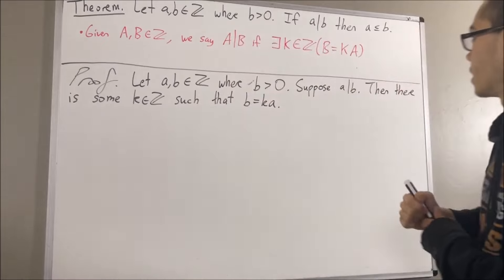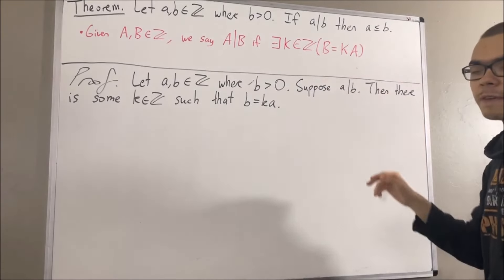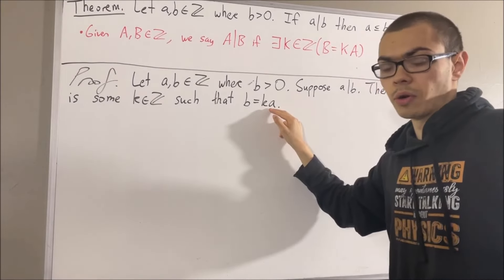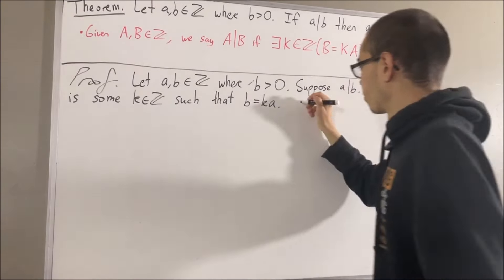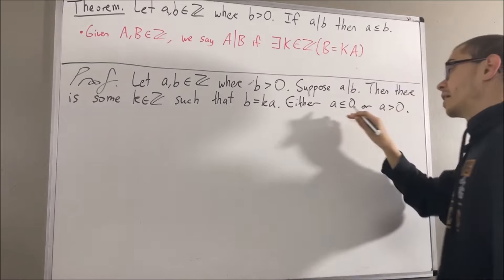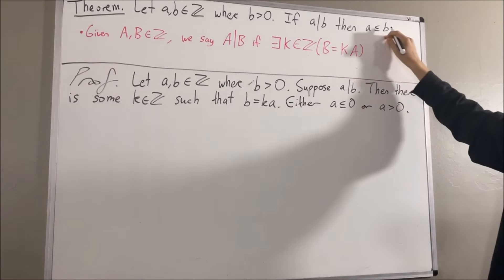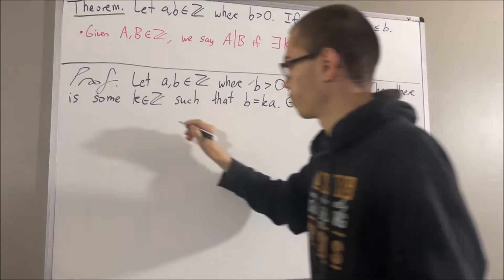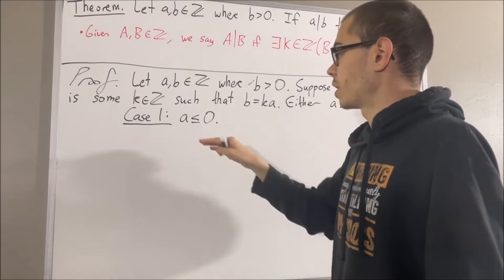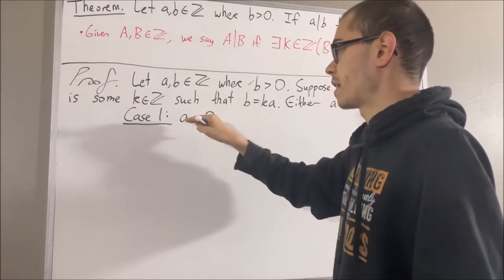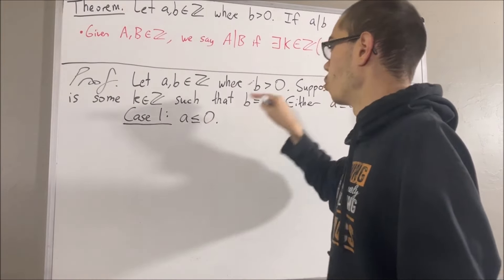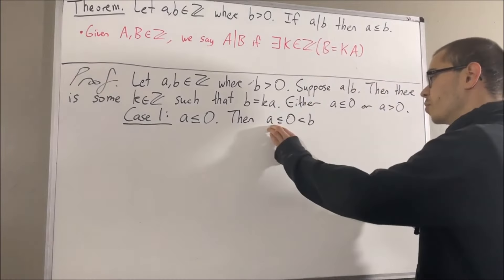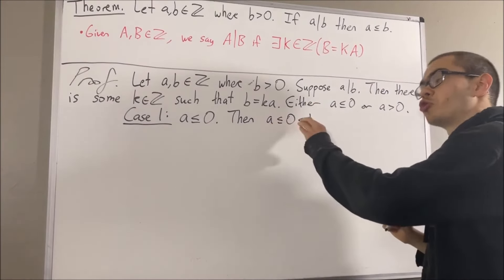From here, to show that a is less than or equal to b, we're going to divide this up into two cases: either a is less than or equal to zero, or a is greater than zero. In either case, we're going to show that a is less than or equal to b. Let's start with case one where a is less than or equal to zero. In this case, we have that a is less than or equal to zero, which is less than b.